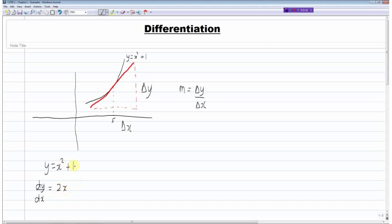Now when dealing with constants, dy dx of a constant is always 0. So if it's plus 10, plus 15, these are all constants, so the differential of a constant is always equal to 0. So in this case dy dx is equal to 2x plus 0, or just dy dx is equal to 2x.